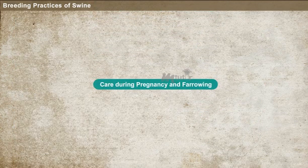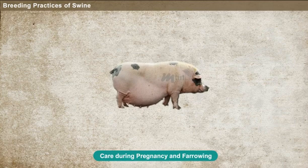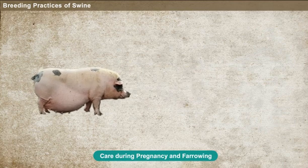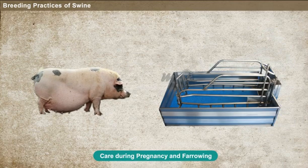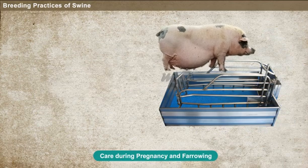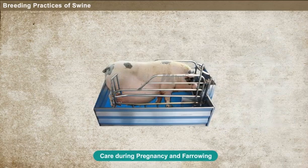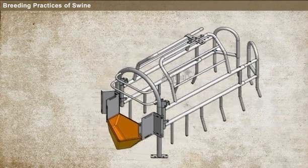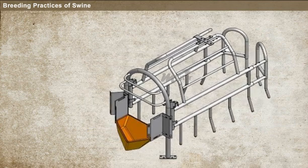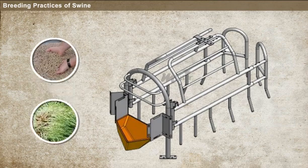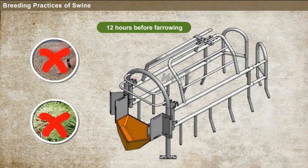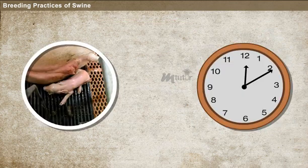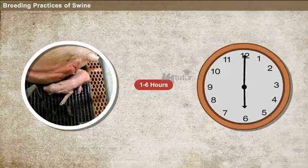Care during pregnancy and farrowing. Before three weeks of farrowing — that is, the delivering period — the pregnant sow should be separated into a clean and dry farrowing pen. Unpolluted bedding material should be provided while farrowing. Sufficient amounts of good quality feed like concentrates and green fodder should be provided. Feeding should be avoided 12 hours before farrowing. The farrowing process takes around one to six hours.